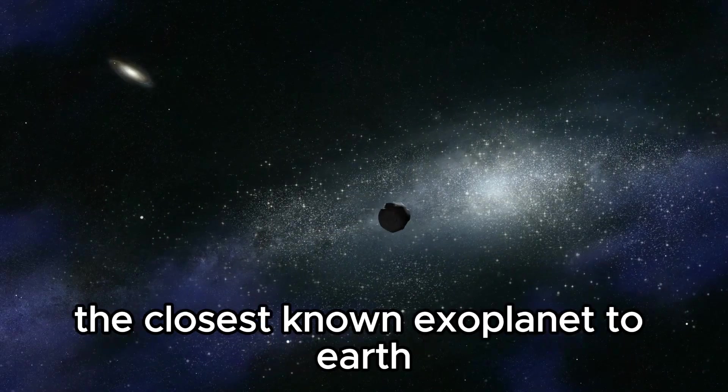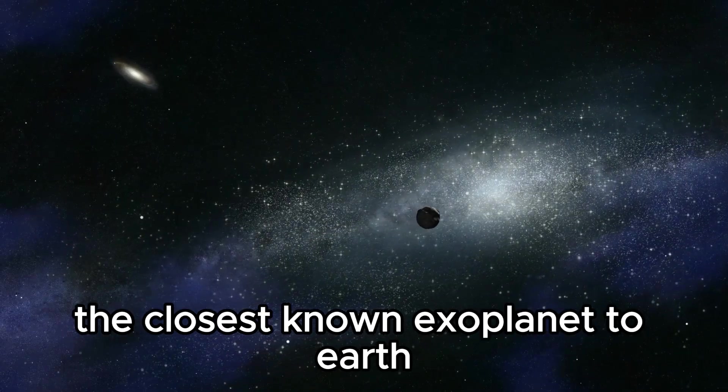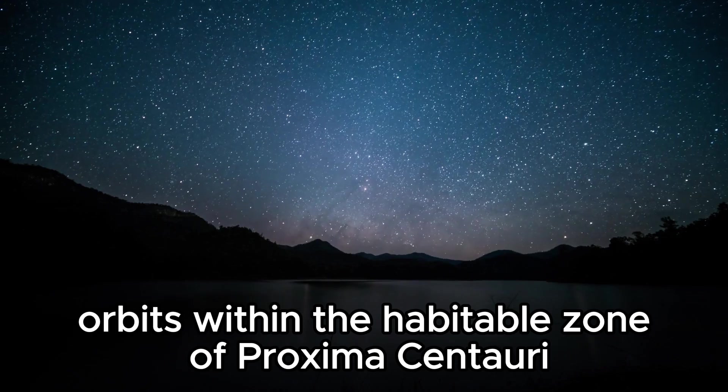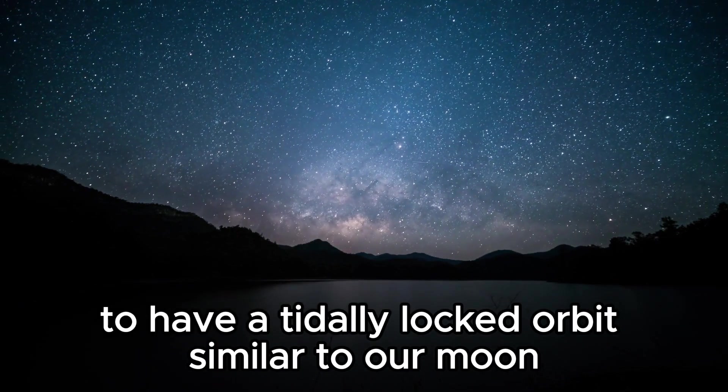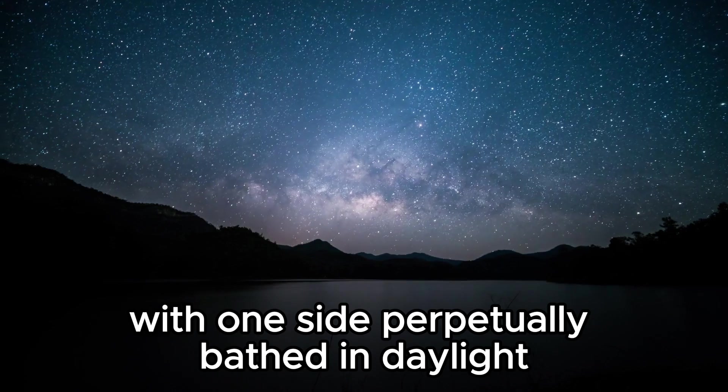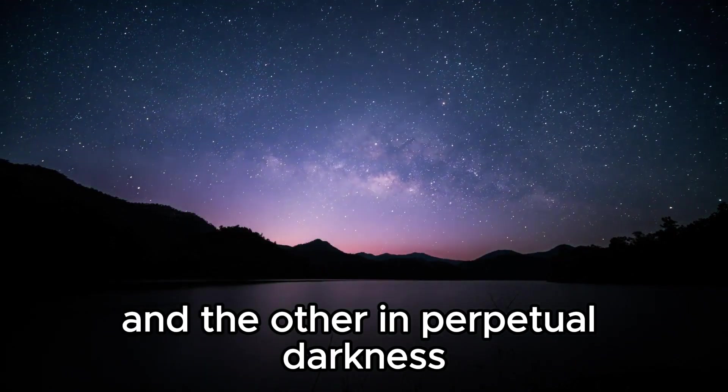Proxima b, the closest known exoplanet to Earth, orbits within the habitable zone of Proxima Centauri. The planet is believed to have a tidally locked orbit similar to our moon, with one side perpetually bathed in daylight and the other in perpetual darkness.